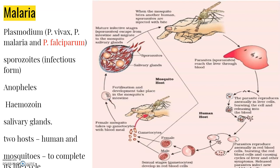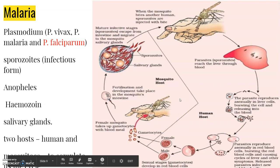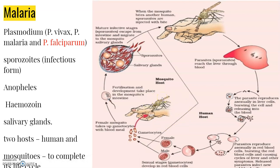When a female Anopheles mosquito bites an infected person, the parasites enter the mosquito's body and undergo further development. They multiply within the mosquito to form sporozoites, which are stored in its salivary glands. When these mosquitoes bite a human, the sporozoites are introduced into the human body, initiating the malarial infection cycle again.